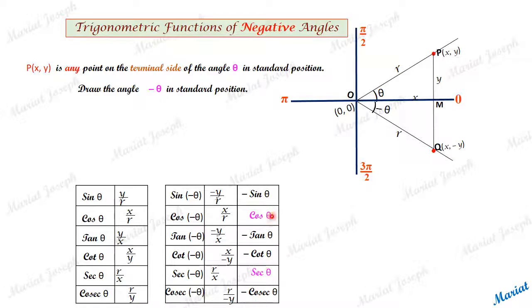So here we have got six new identities. These are identities because these are true for any value of theta, irrespective of the value of theta. We have got six new relations.